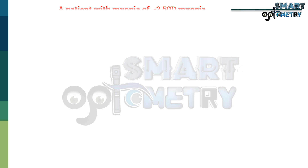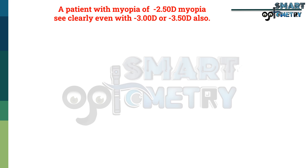Let's take an example for easy understanding. A patient with myopia of -2.5 diopters may see clearly even with -3 diopters or -3.5 diopters also. Let's see how.